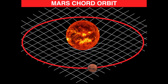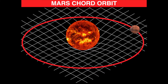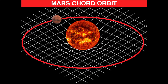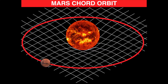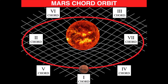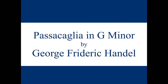Then we moved farther away from the Sun to Mars. Mars feels less gravitational force from the Sun's curving spacetime and orbits much slower — 687 days to orbit the Sun. We heard a longer chord cycle, adding in chords that have a weaker pull in this piece by Handel.